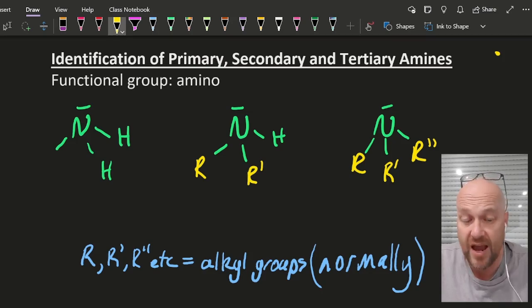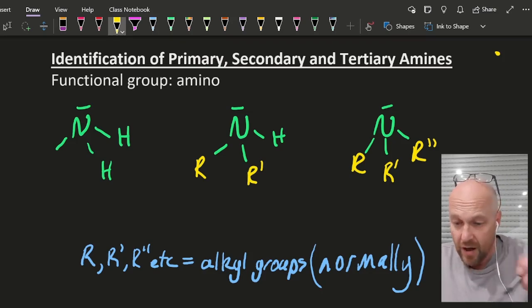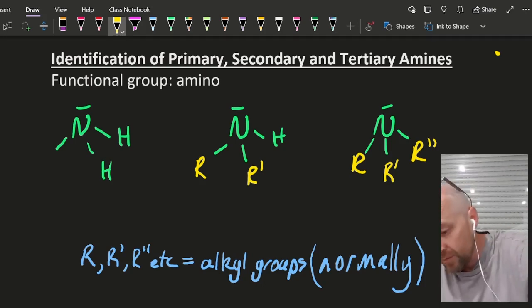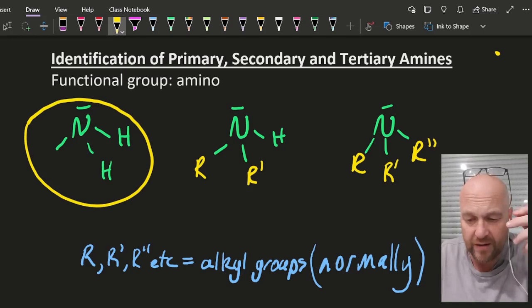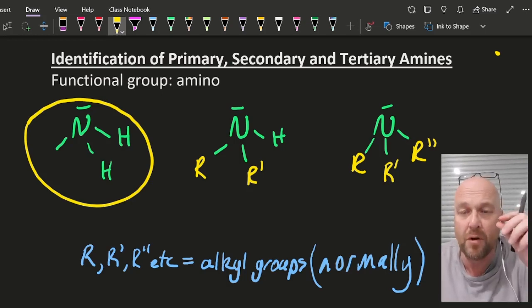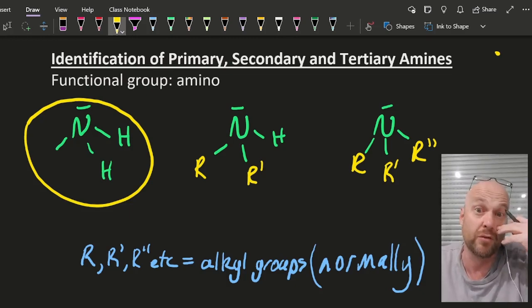Identification of primary, secondary and tertiary amines. The functional group is the amino group, which is this group here. Functional group means there is a specific collection of atoms on a molecule that gives that molecule its specific chemical and physical properties.